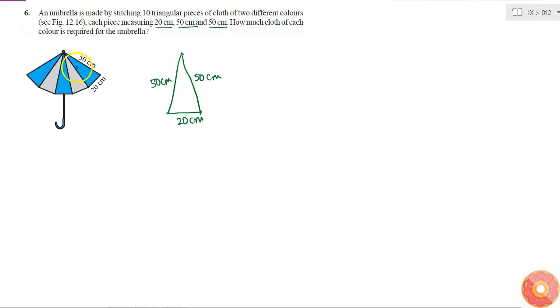Since all the pieces of cloth are identical, first if I can calculate the area of one piece of cloth, then I can simply multiply it by the number of pieces to get the total cloth that is required.